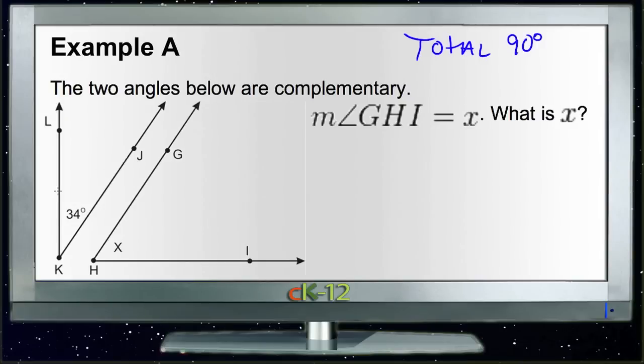All we need to do is take the degree measure of the angle that we know, angle LKJ, which is 34 degrees. And then we add the angle we don't know, marked with X, for angle GHI. If we add 34 degrees to X degrees, we know that the total has to be 90 degrees.